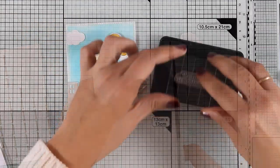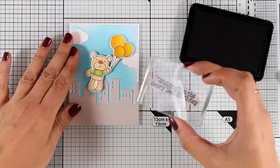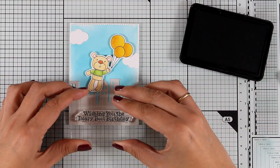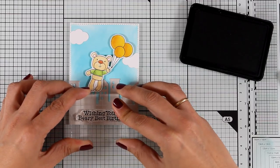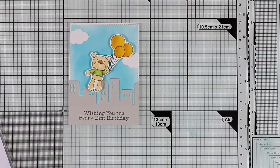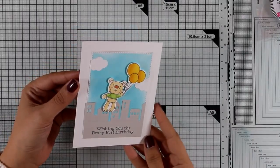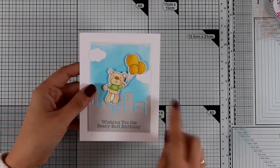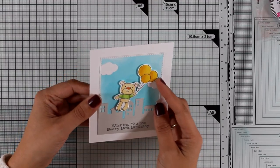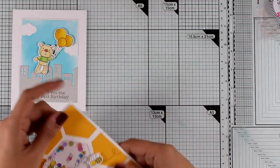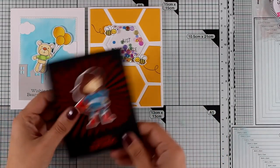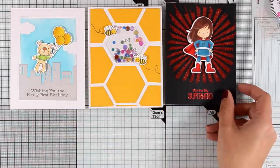To finish off my card I'm going to stamp the sentiment and this is going to be a birthday card so my sentiment reads 'wishing you the very best birthday'. Now you can finish off the card if you like by adding some wink of stella on the balloons or you can even add some glossy accents to make them shiny. I decided to leave it as it is and let's take a quick look at all the four cards that I have created for today using products from the latest release by my favorite things.